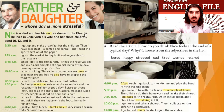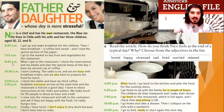Let's read together. Nico is a chef and has his own restaurant, The Blue Jar. He lives in Chile with his wife and her three children, ages 16, 12, and nine. 6 a.m.: I get up and make breakfast for the children, then I have breakfast — a coffee and cereal — and I read the sports section of the paper. 7:15 a.m.: I go to the market to buy fruit and vegetables for the restaurant. 8:45 a.m.: When I get to the restaurant I check the reservations and my emails and plan the special menu of the day. I have my second cup of coffee.